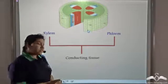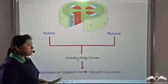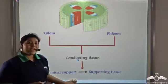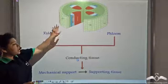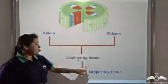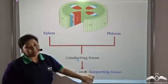So these dead cells provide mechanical support to the plant, and hence xylem and phloem form the supporting tissue of the plant as well.